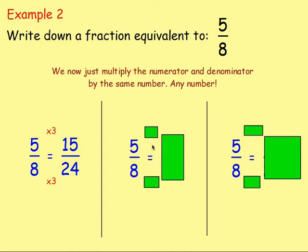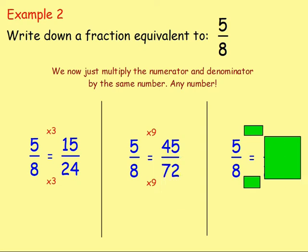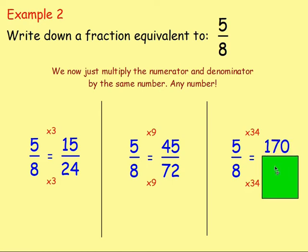Let's try another: five eighths multiplied by nine. Five times nine is 45, and eight times nine is 72, giving you 45 over 72 - the same as five eighths. And one more: multiplying by 34. Five times 34 gives you 170, and eight times 34 gives you 272. So 170 over 272 is the same as five eighths. You can see we're multiplying upwards - the numbers become bigger to create equivalent fractions.